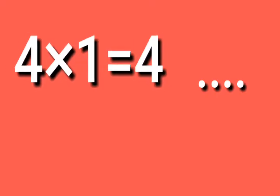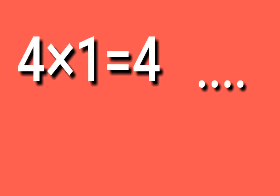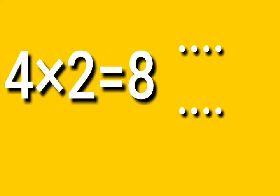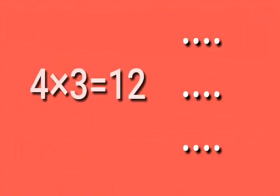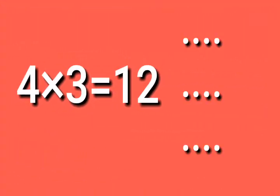Table of four. Four one is four. Four two's are eight. Four three's are twelve.